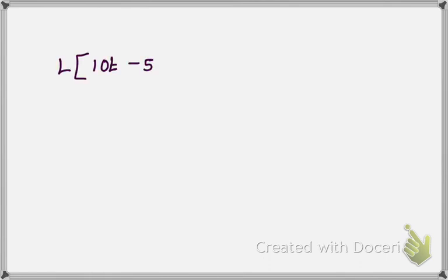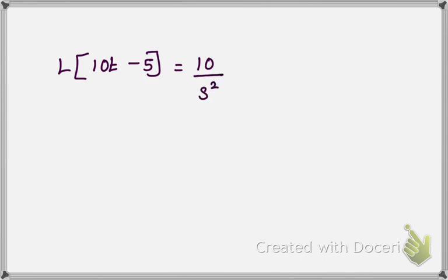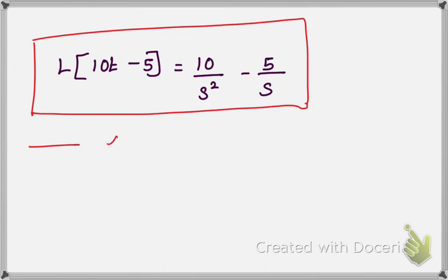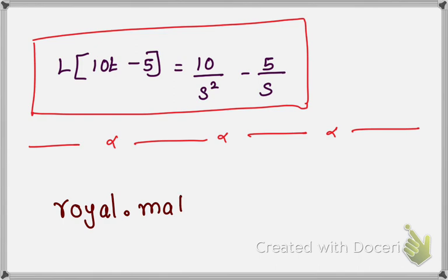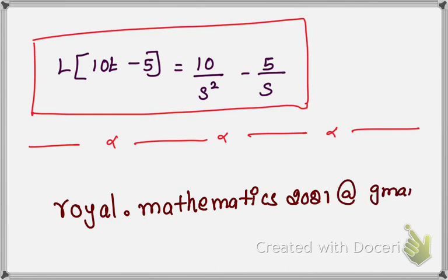Therefore, after solving, we obtain L of 10t minus 5 equals 10 by s squared minus 5 by s. You can further simplify if needed, or stop at this step. In this method, we applied the linearity property of the Laplace transform. If you have any doubts or want to solve any problems, send your questions to royal.mathematics2021 at gmail.com. I will send the answer in the coming videos. Thank you.